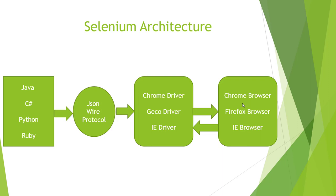Selenium supports a lot of browsers and each browser provides its own driver. For Chrome there is ChromeDriver, for Firefox there is GeckoDriver, for Internet Explorer there is the IE driver, and for Safari on Mac there is the Safari driver. We make API calls through JSON wire protocol, which communicates with the appropriate driver, and the driver performs the actions on the browser. For example, if we want to perform a click operation, we write the code, it makes an API call, communicates with ChromeDriver, and ChromeDriver is responsible for performing the action.